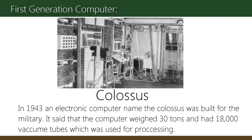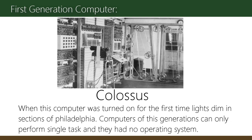The Colossus weighed around 30 tons and had 18,000 vacuum tubes used for processing. When this computer was turned on for the first time, lights dimmed in sections of Philadelphia. Computers of this generation could only perform a single task and they had no operating system.